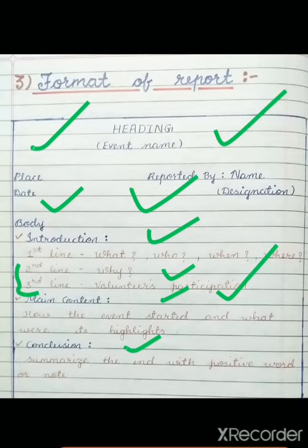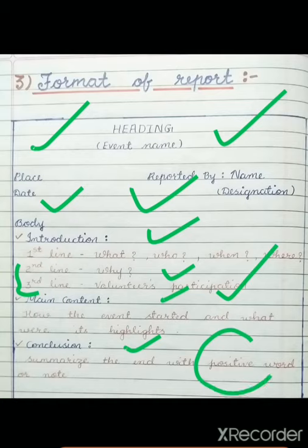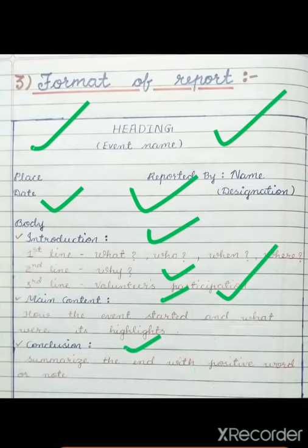Last comes the conclusion. Remember that the conclusion is always two or three sentences — don't write a full paragraph. The conclusion must be only two to three sentences and must be in a positive manner, containing a positive word. That was the simple format of the report.